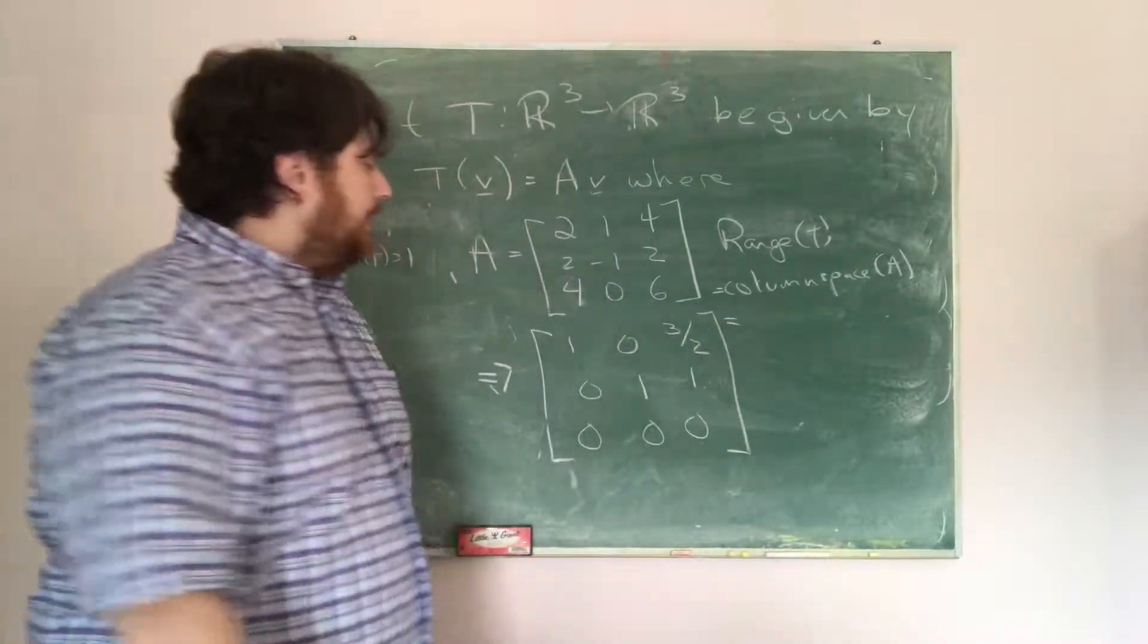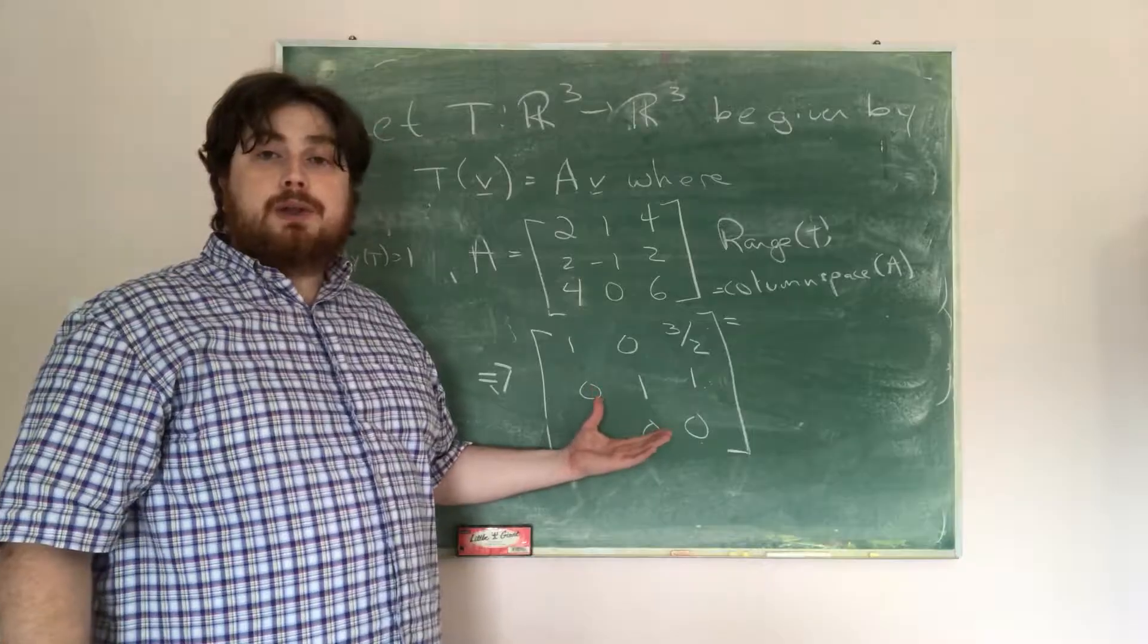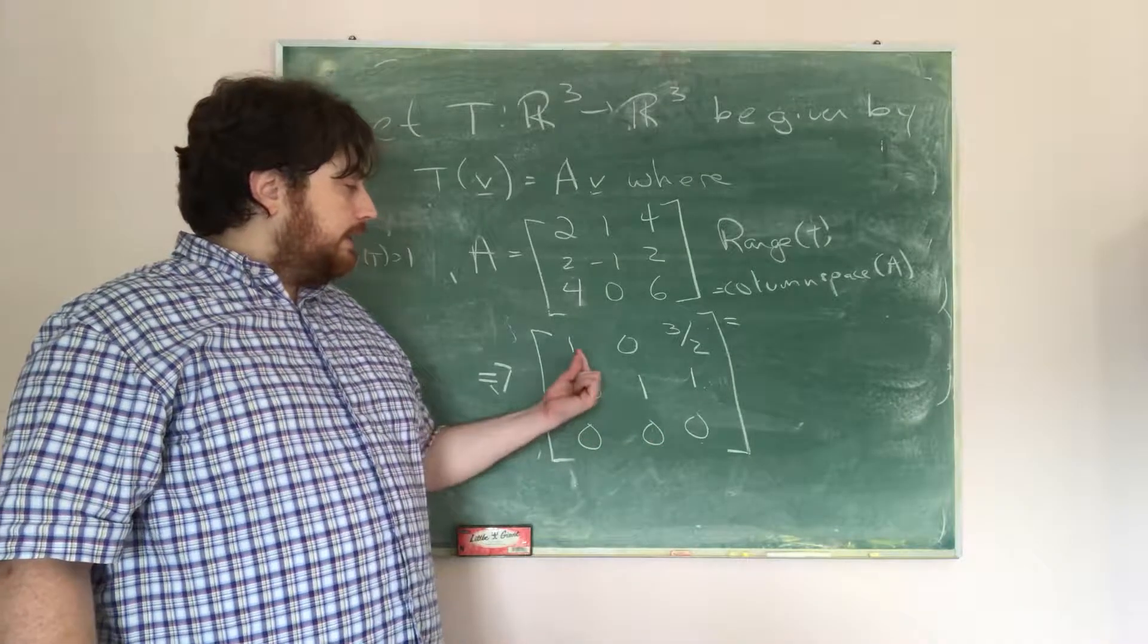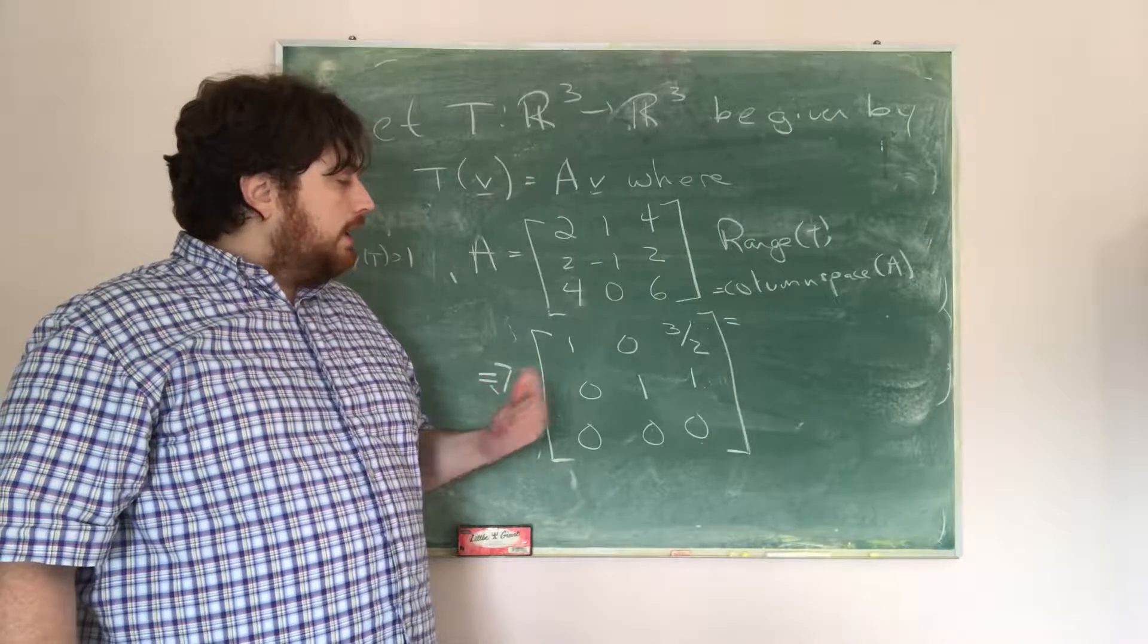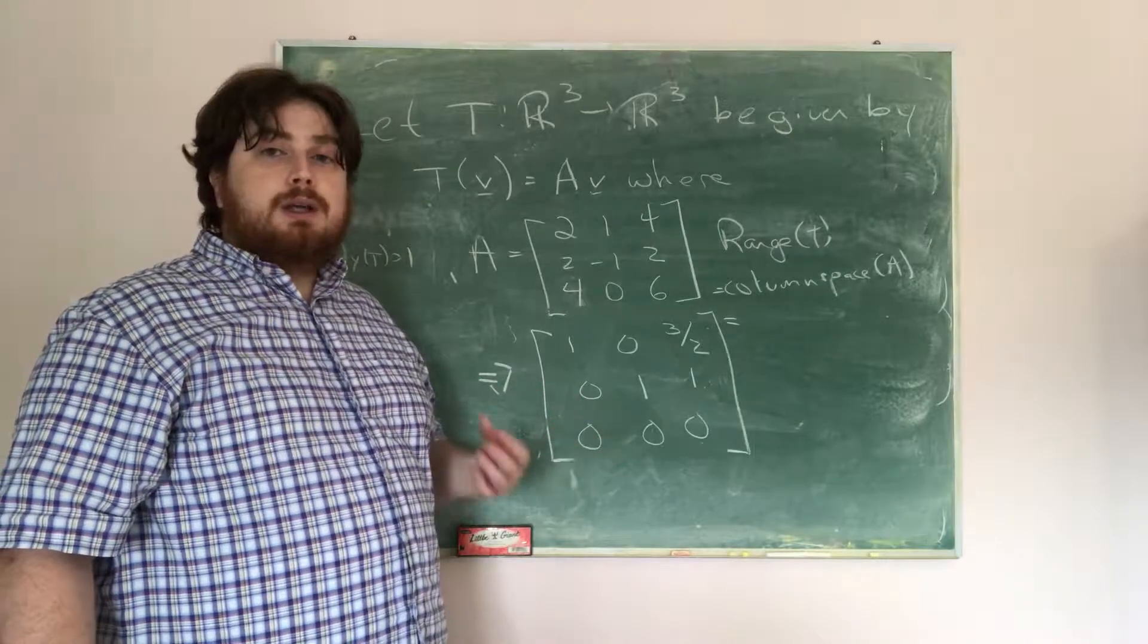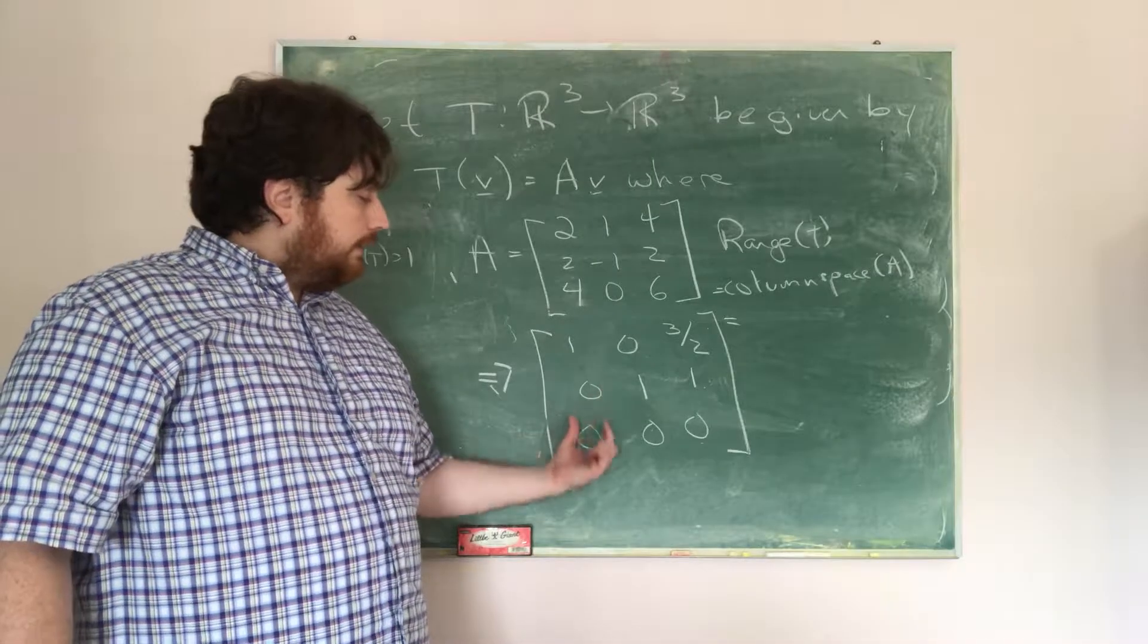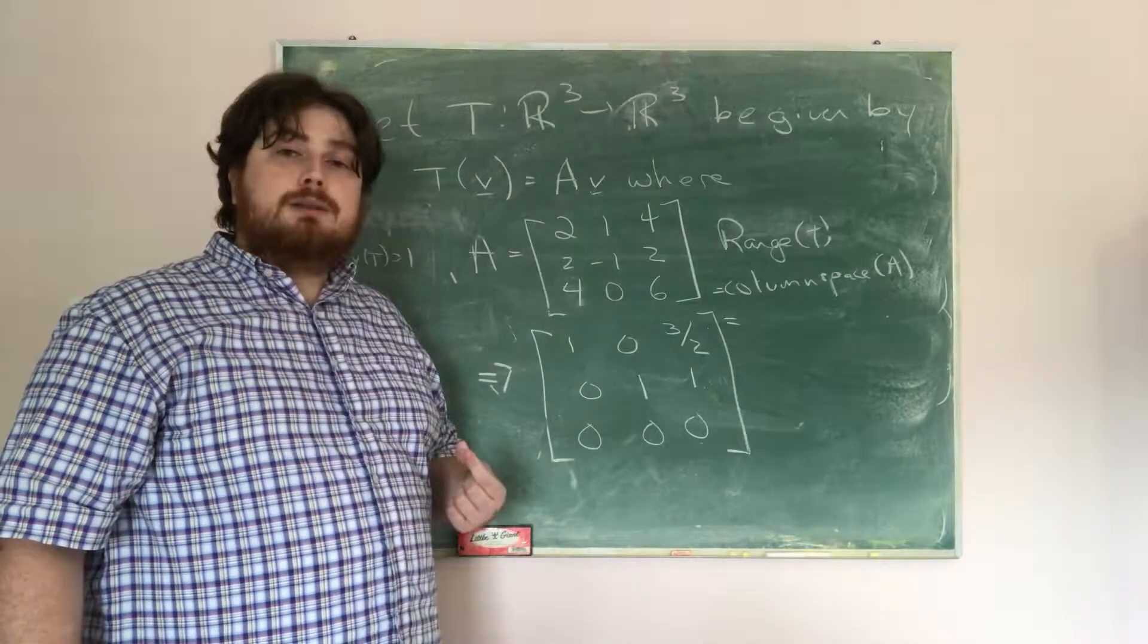Now, the column space is equal to, well, what we have to do is we have to look at this and say for all the leading 1s, or all the leading non-zero terms that are 1 in here, it's going to create a column, which is linearly independent from other columns. And so what we would do is say, okay, well, in the first column, we have a leading 1, and the second column, we have a leading 1.